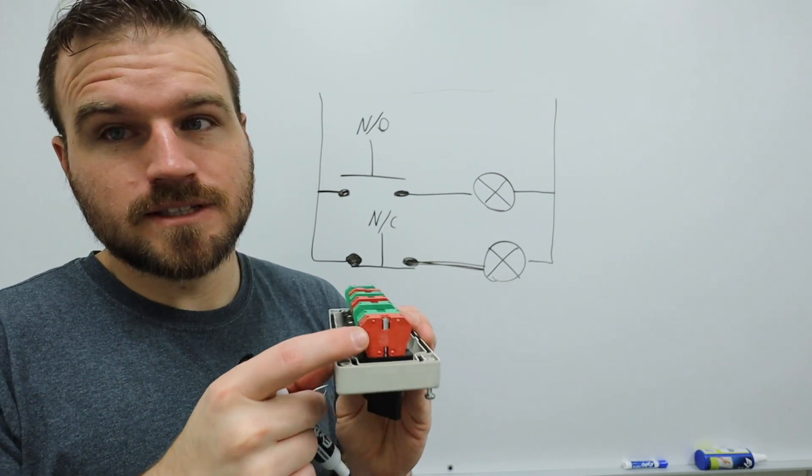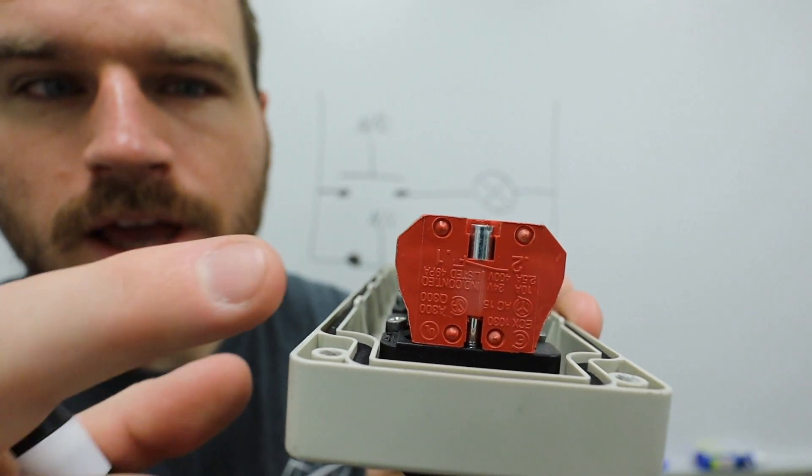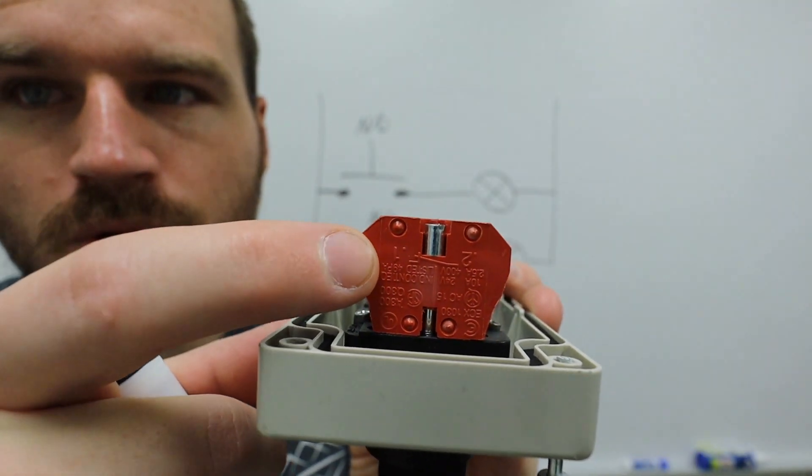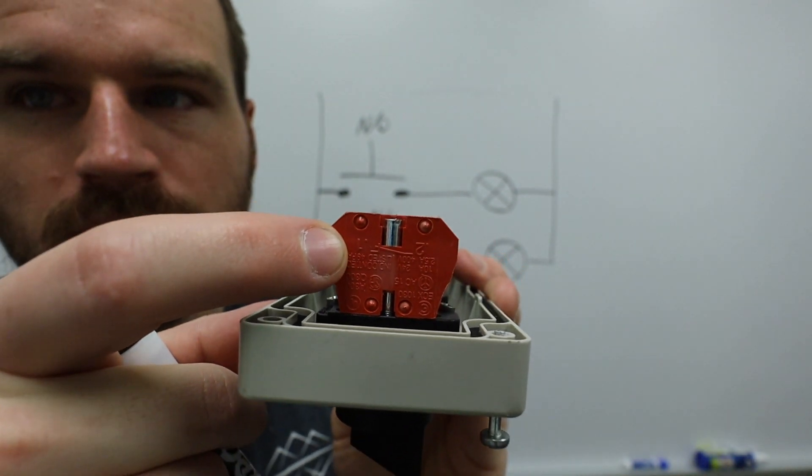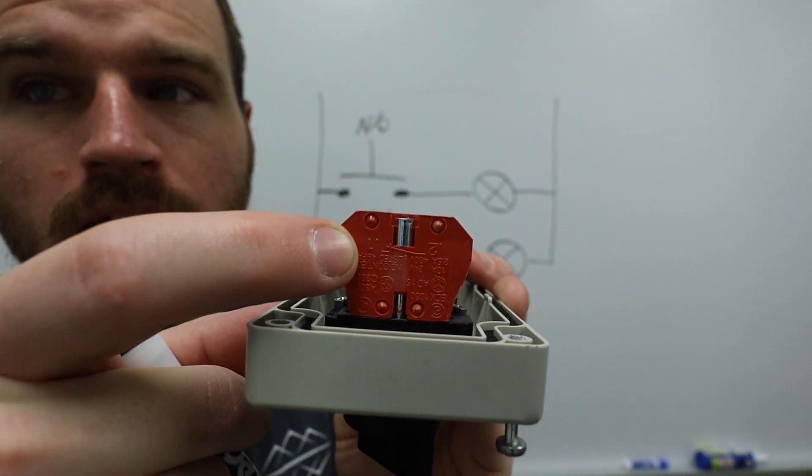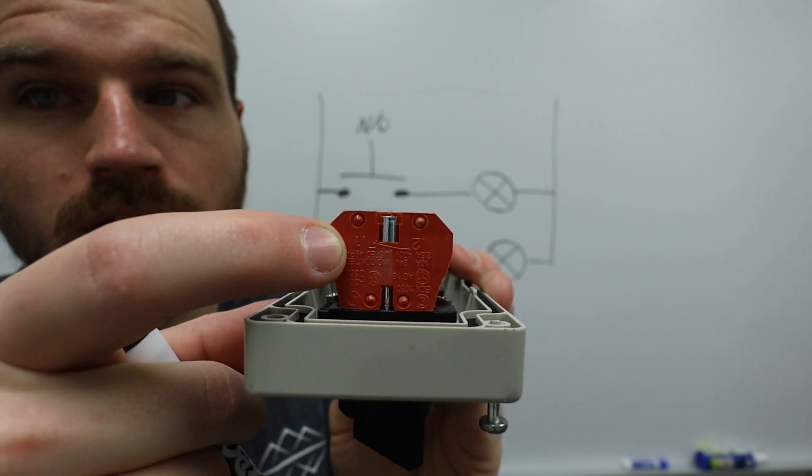I want you to look at the symbol and I'm going to try to get really close here. And you can see there's a symbol right here on the side. And that symbol is going to show you a switch, much like some of the ones that we've drawn before. And it's going to actually tell you whether it's normally open or normally closed.